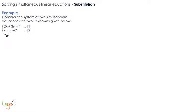When one of the equations is written in this form, x equals something or y equals something, the easiest method to use is the method of substitution. The first step is substitute equation 2 into equation 1.